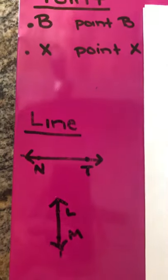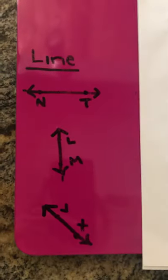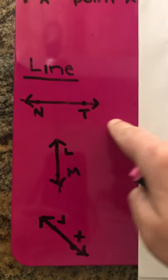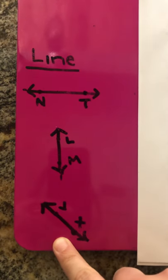The next thing we're going to talk about are lines. Now, if you take a look, you can see that lines can go in any direction. We have a horizontal line, a vertical line, a diagonal line.